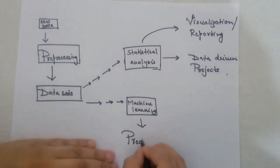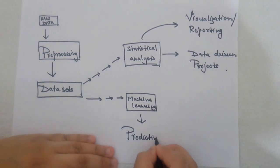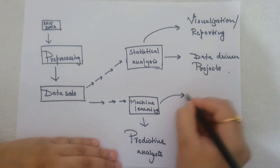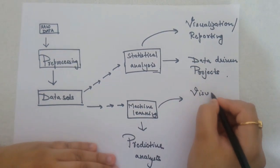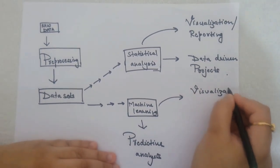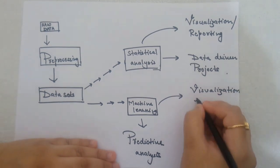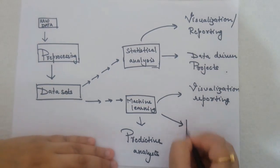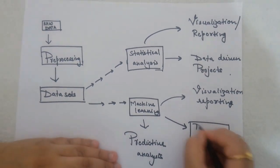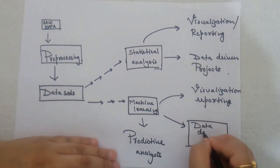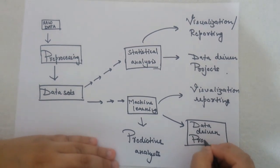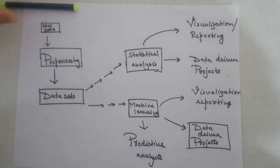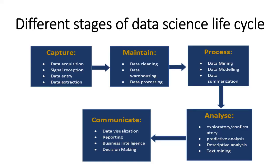These machine learning models are used for predictive analysis — predicting future outcomes, such as what the consumption or sales will be over the next five years. These results can also be visualized, reports can be made, and all of these are accumulated and used as data-driven projects. This is the overall role of a data scientist.